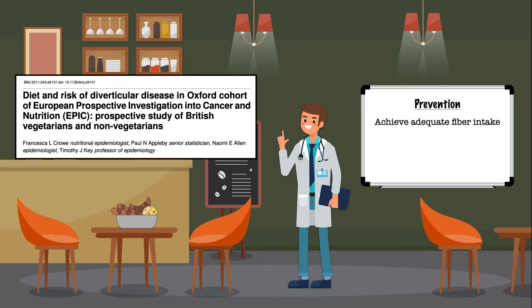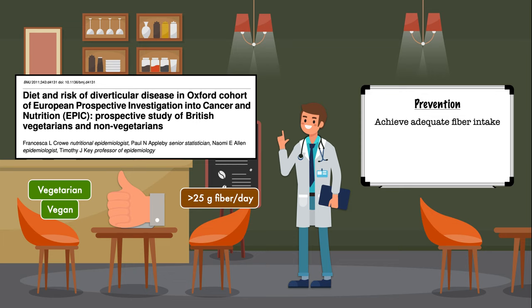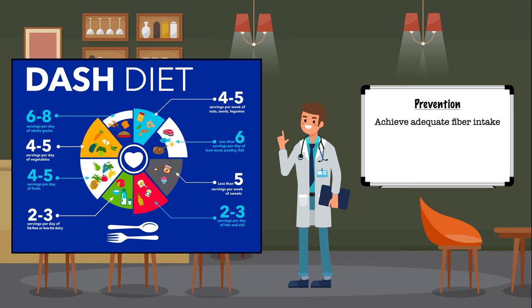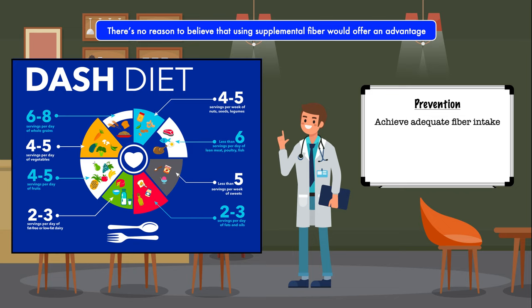One of the studies in the meta-analysis also explored the impact of a vegetarian or vegan diet. The authors found that those diets were especially useful in preventing hospitalization or death from diverticular disease. Nevertheless, a diet that included meat but also contained greater than 25 grams of fiber per day offered protection against these outcomes as well. It appears that a diet designed for prevention can include foods from both plant and animal sources, as long as there's an emphasis on fiber-rich, plant-based foods like fruit, vegetables, whole grains, and legumes. A diet pattern with clear parameters that could be recommended for this purpose is the DASH diet. There's also no reason to believe that supplemental fiber would offer an advantage over food sources, so a food-first approach is encouraged.